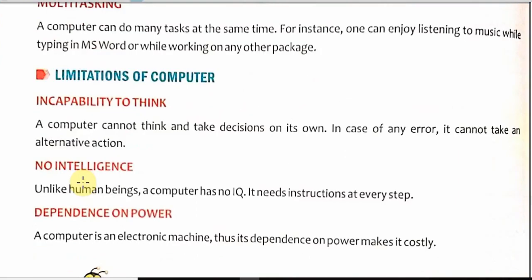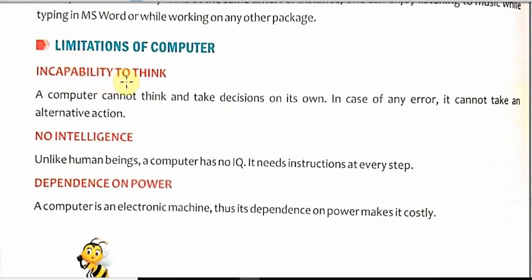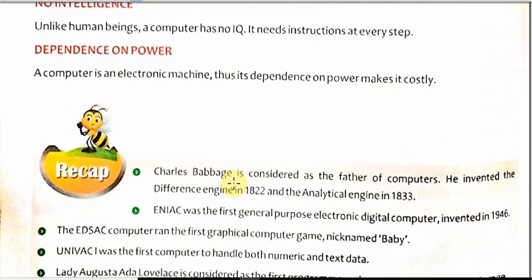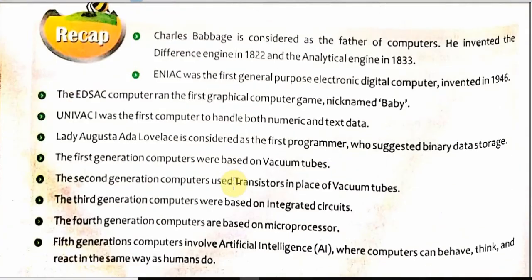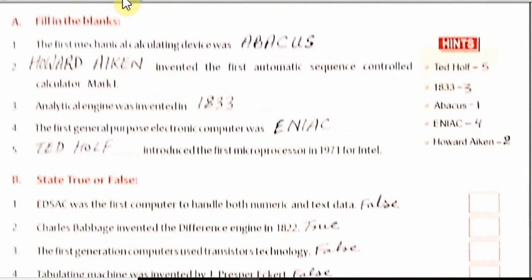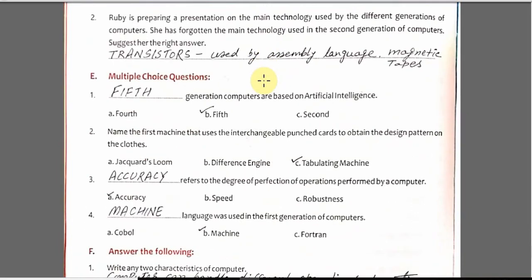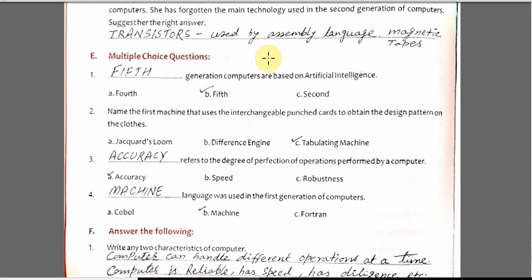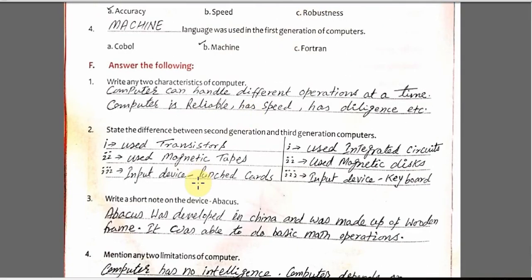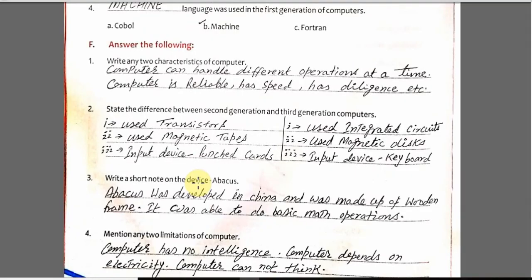Computers also have some limitations. A computer is not capable of thinking — it has no intelligence. It can only do things which we provide instructions for. Computers also depend on electric power. So students, this was the first chapter. Please go through the video again and again. I am also providing the PDF version. You have to replay the video as many times as you can. All the answers are provided here — you can write them in your notebook. Please revise the video as many times as you can, and we will start the next chapter in the next session. Till then, bye-bye.